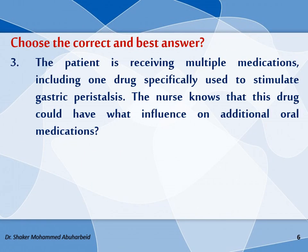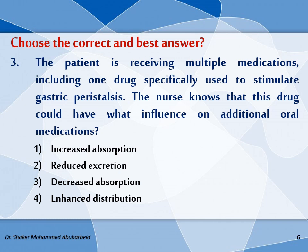The third question: a patient is receiving multiple medications including one drug specifically used to stimulate gastric peristalsis. The nurse knows that this drug could have what influence on additional oral medications? The first option: increased absorption. Second option: reduced excretion. Third option: decreased absorption. And fourth option: enhanced distribution.